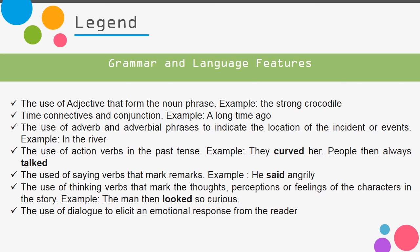The use of action verbs in the past tense — for example, 'they cooked', 'they talked'. The use of saying verbs that convey remarks — for example, 'he said angrily', 'he told'. The use of thinking verbs that convey the thoughts, perceptions, or feelings of characters — for example, 'the man looked so curious'.